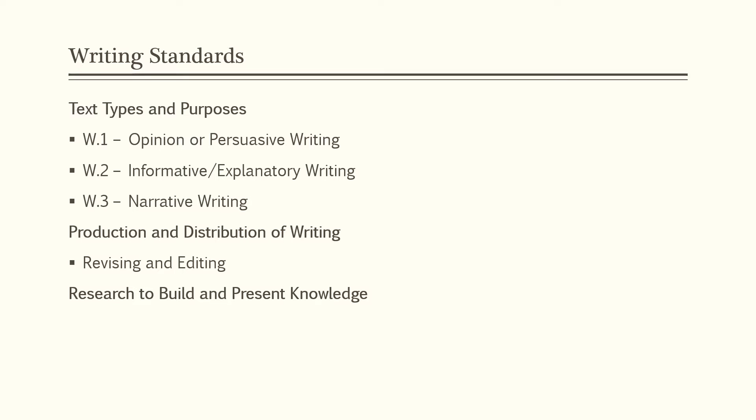There are three sections to the standards. The first section is about text types and purposes. At all grade levels these are pretty much the same — they just increase in complexity. W.1 is opinion or persuasive writing, W.2 is informative or explanatory writing, and W.3 is narrative writing.